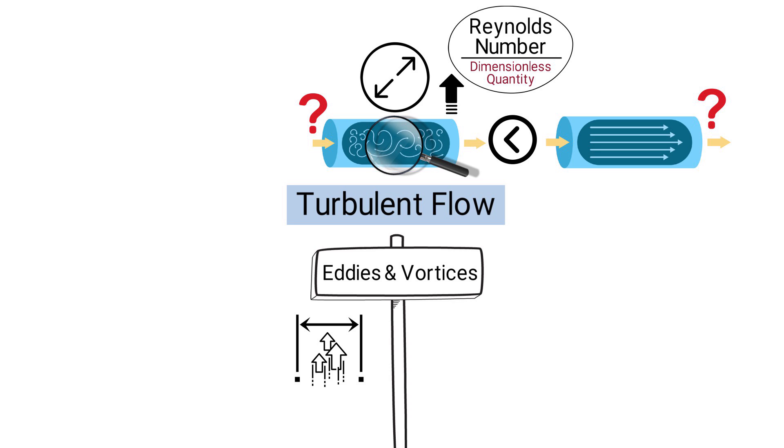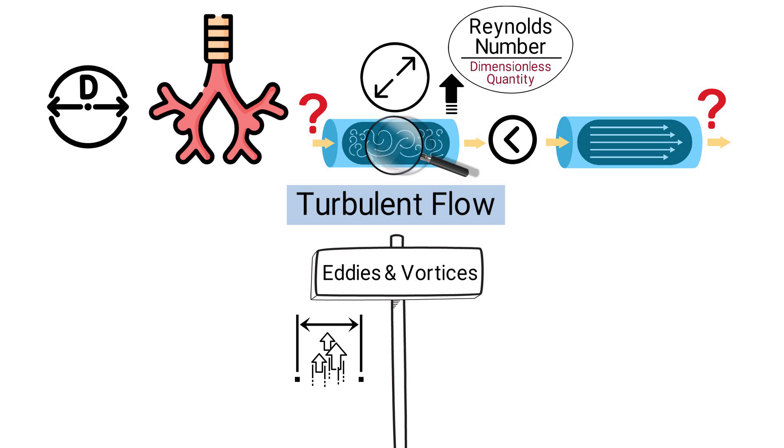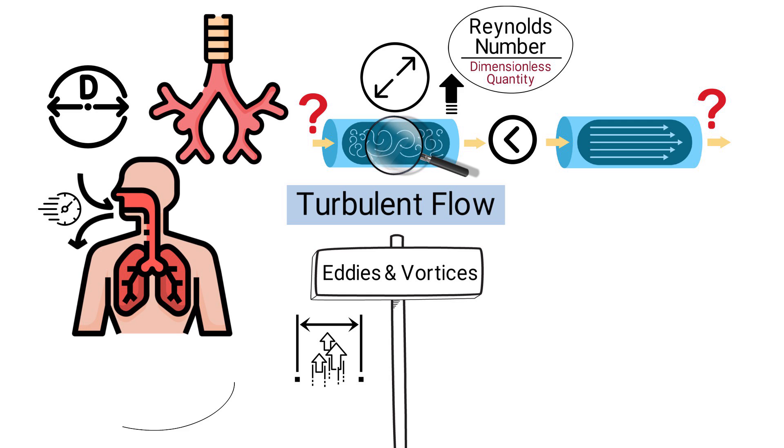Turbulent flow is often observed in the trachea and large bronchi, where the diameter of the airways is larger, and the speed of airflow during inhalation and exhalation is higher. This kind of flow aids in the rapid ventilation of the lungs.